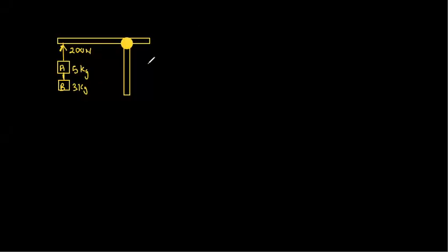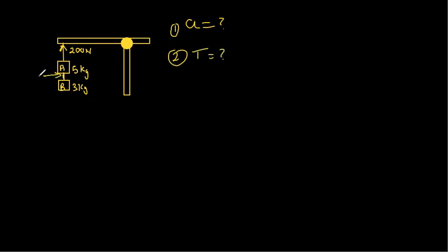If you've got two bodies that are attached together by a rope or a string and are being pulled up by a specific force, then how are you going to find, number one, the acceleration of the system, and number two, the tension between the two bodies? Between them there is tension, but there is also a force applied on the other side — tension one and tension two. You're going to draw a free body diagram for each of the masses.